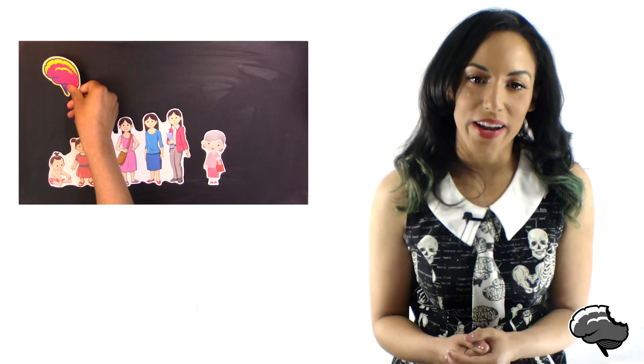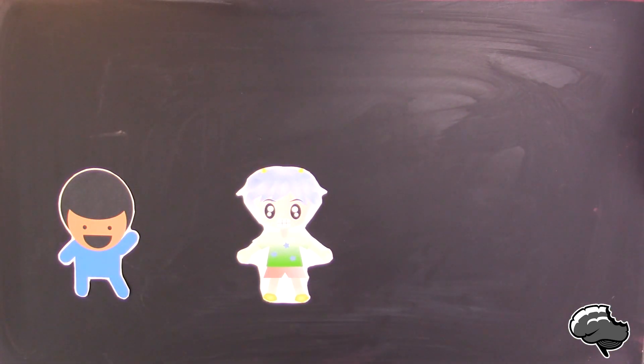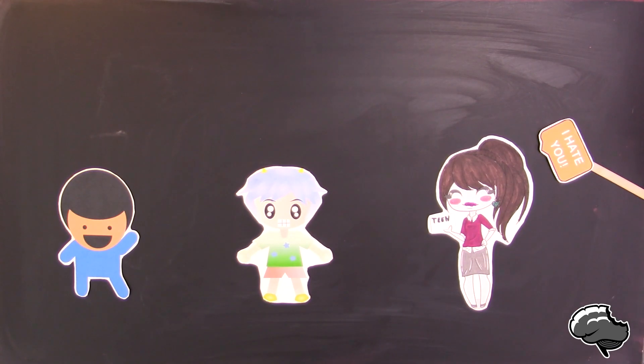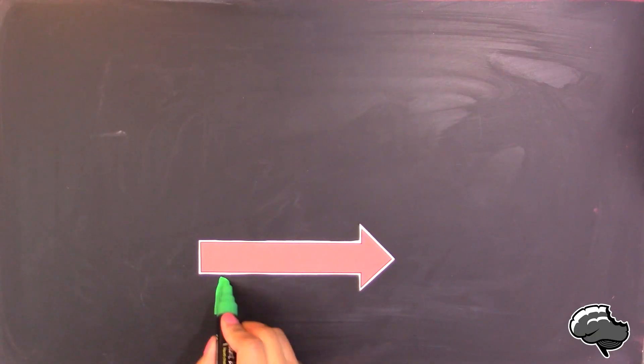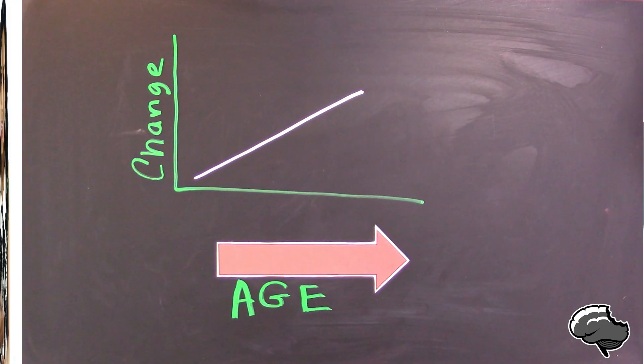Your brain undergoes changes throughout the lifespan. Some changes which take place during childhood and adolescence are more linear in nature, meaning the changes that take place may increase or decrease as one gets older.